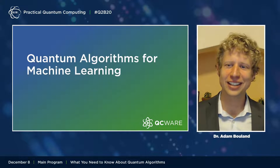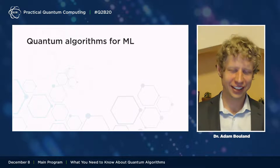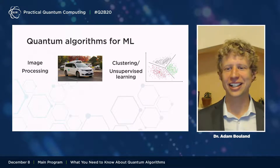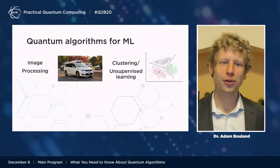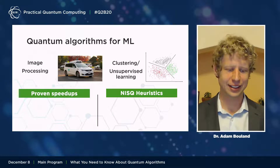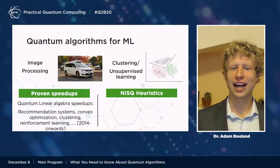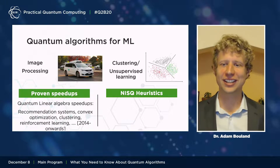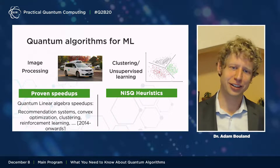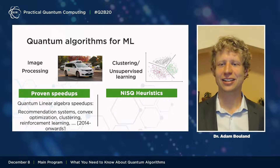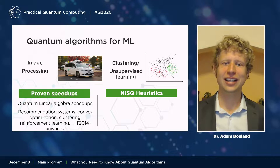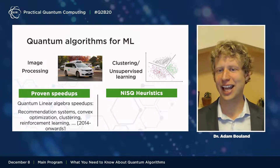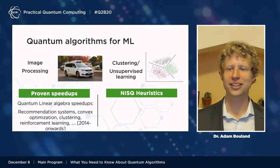Machine learning has a huge number of applications in industry, from image processing to natural language processing to clustering and unsupervised learning. Quantum algorithms for machine learning fall into two broad families. All proven speedups for quantum machine learning are based on quantum linear algebra speedups. Back in 2014, it was first realized that quantum computers can perform certain linear algebra operations — like solving linear systems — faster than classical computers. Since linear algebra is so common in machine learning, subsequent quantum algorithms have been developed for recommendation systems, convex optimization, clustering, reinforcement learning, and more.